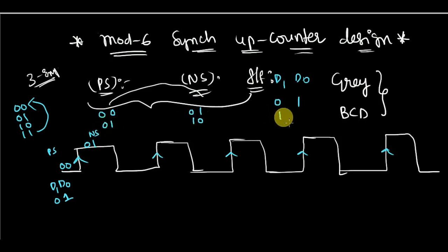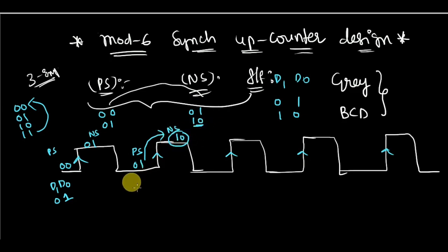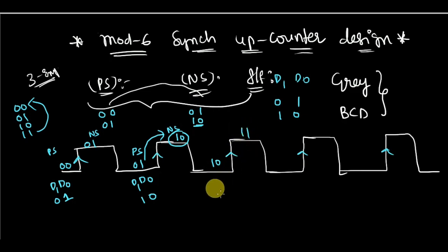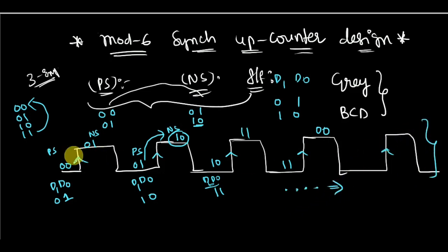If the counter is in state 0,1, the next state is 1,0, so 1,0 becomes the next state. To change the state from 0,1 to 1,0, the inputs I need to give will be 1,0. Then 0,1 becomes the present state and the next state will be 1,1, so D1 and D0 will be 1,1. Then 1,1 becomes the present state and the next state will be 0,0. This process continues and can be represented using a simple clock pulse diagram — you should be very clear with this to solve problems.